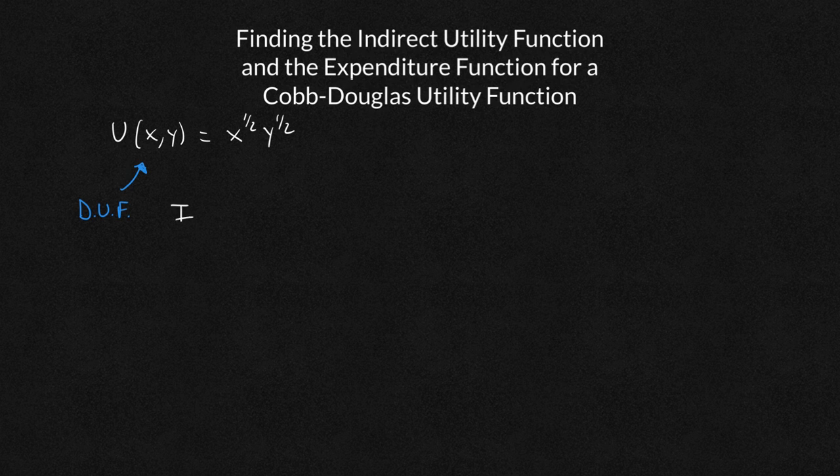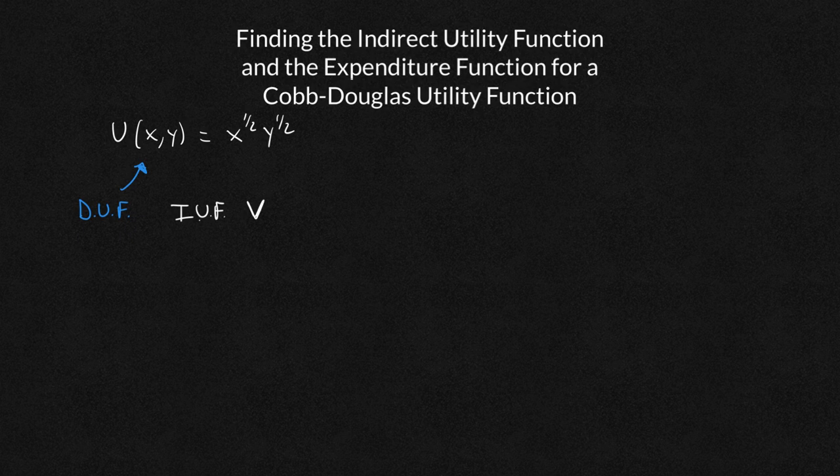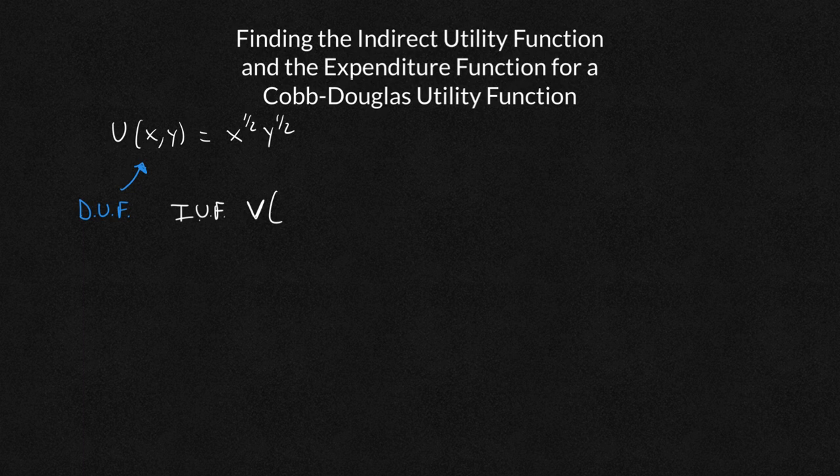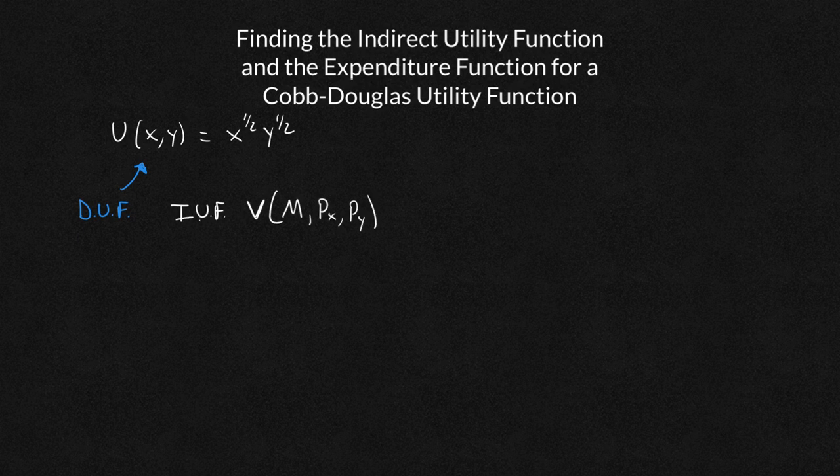The indirect utility function, we use V instead of U. It's still a measurement of utility. But what the unknowns are going to be, it's going to be a function of the income M, the price of x, and the price of y. So what the indirect utility function is really telling us is if I know a level of income and the price of x and the price of y, the maximum utility I can get is going to be V.